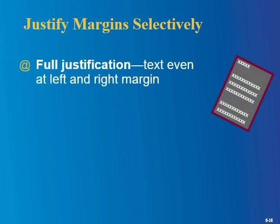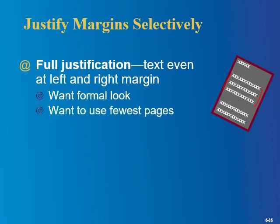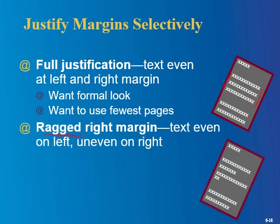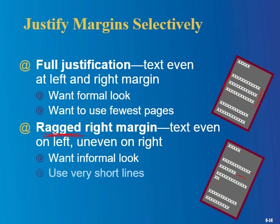With full justification, text is even at both the left and right margin — very formal looking, and it does use fewer pages. The ragged right margin — that's the word I was looking for — is far more typical. You do have little gaps, but it's more common and they call it informal. It might look a little bit less formal than full justification, but it's far more typical.